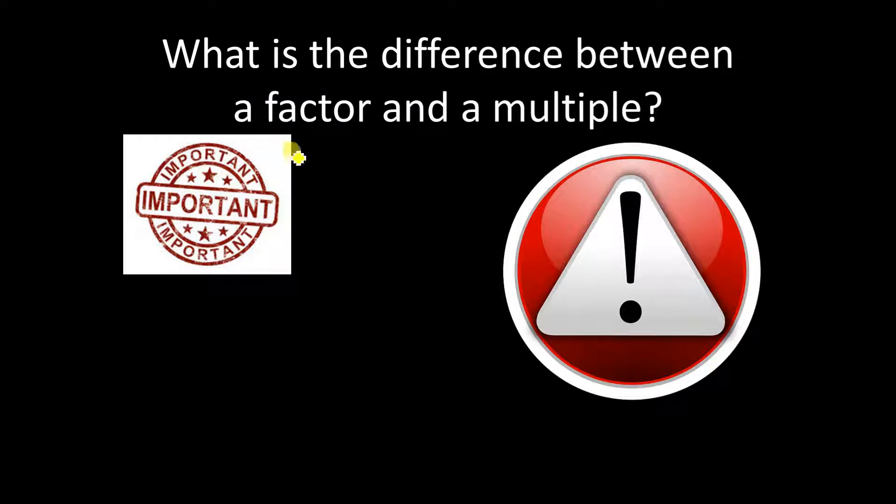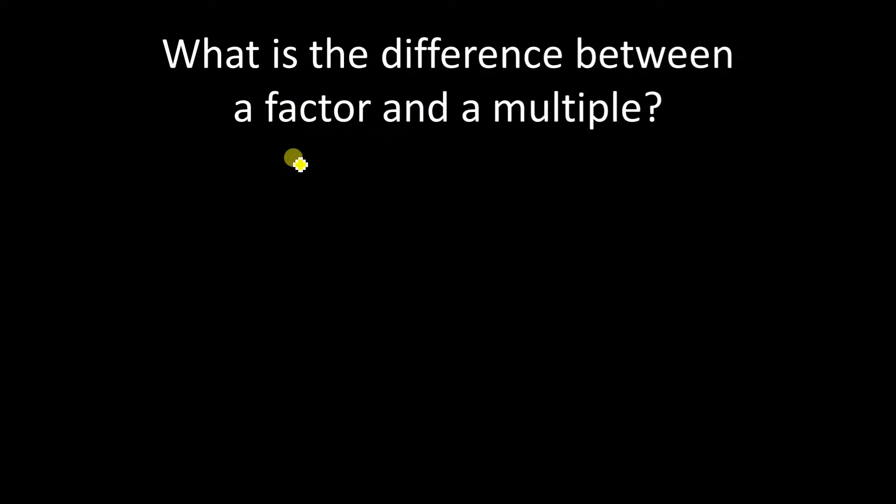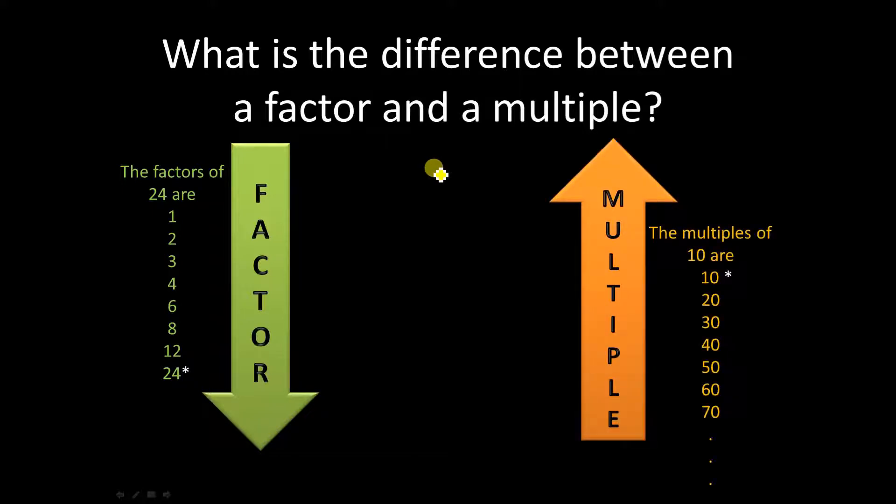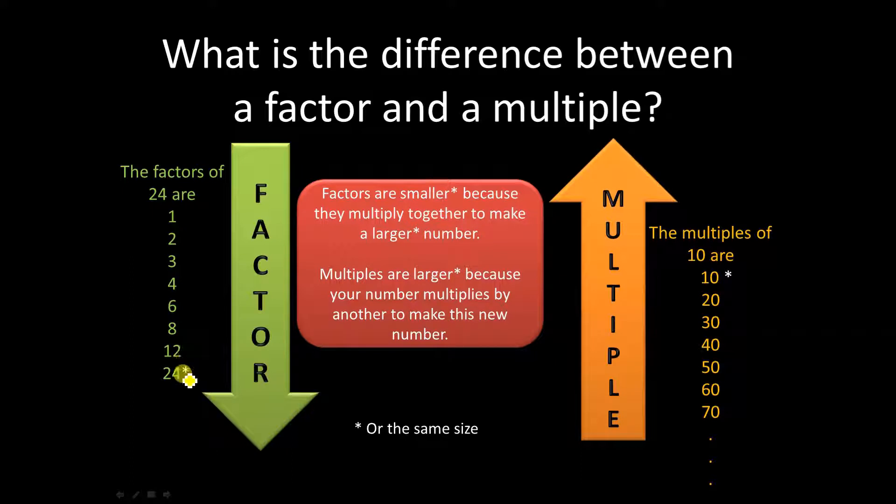Let's talk about the difference between a factor and a multiple now. This is a really difficult thing, and I've been teaching math for a long time, and it's a very difficult thing to say. But I think the easiest way to think about it is that factors are dealing with smaller numbers, and multiples are dealing with larger numbers. Now, larger or the same, smaller, or the same size. But when you're talking about factors, like the factors of 24, all of the factors except for 24 itself, all of them are smaller. When you're talking about multiples, like say the multiples of 10, all of the multiples are larger except for the number itself. So hope that helps you keep it straight in your mind.